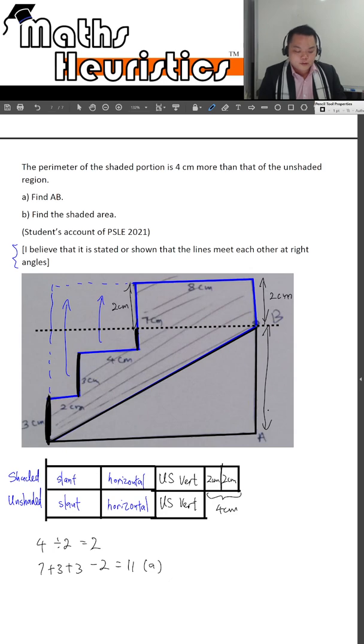What about part B? For part B, once you're able to obtain the height of this triangle, and you know that this is 8 cm, 4 cm, and 2 cm,